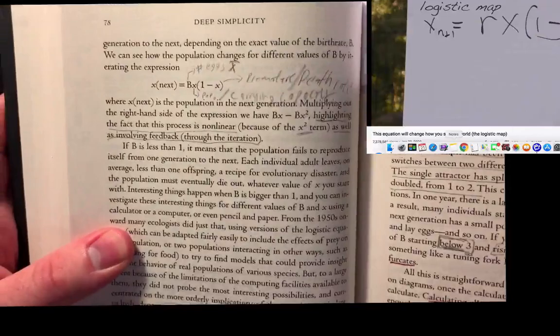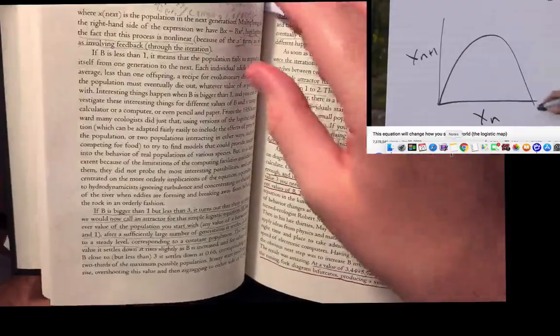Right there, an example of a system involving feedback, three iterations. Both of them talk about the changes that happen as the May equation changes its value.